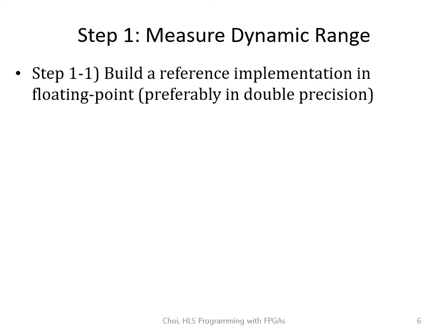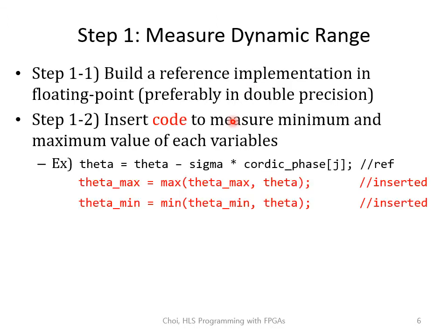Now let's go over the fixed-point optimization steps one by one. The first step is to measure the dynamic range. To be more specific, build a reference implementation in floating-point representation, preferably in double precision. Next, insert a piece of code that measures the minimum and maximum value of each variable. For example, if you have code that updates data, you want to insert code that measures the maximum and minimum value of data.